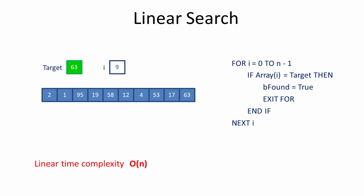However, the amount of memory required over and above the amount of data being processed doesn't change. The algorithm itself still has only one target value and still needs only one loop counter. The space required by the algorithm remains constant, regardless of the amount of data. The linear search algorithm, therefore, has constant space complexity.